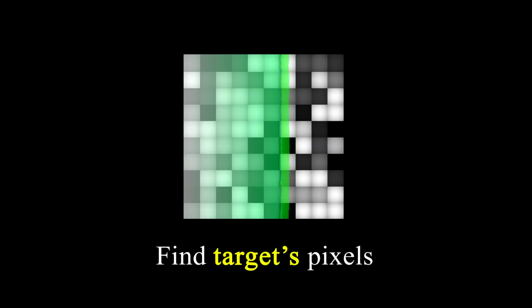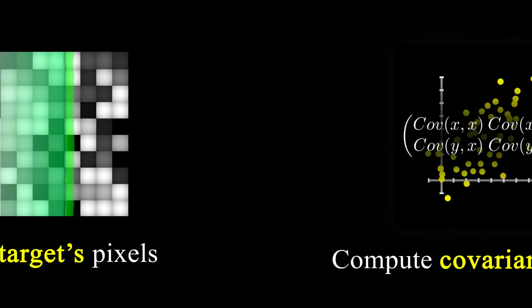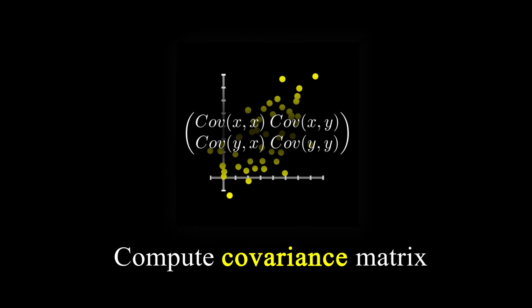In terms of programming, we first scan through all the pixels of our image. If we find the colored pixel, we add its coordinates to an array. Then, we compute the mean value of the x-coordinates and the y-coordinates, so that we can compute the variance and covariance according to their definitions.